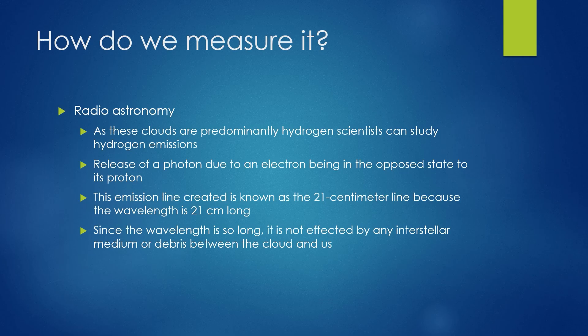How do we measure these? We use radio astronomy. As these clouds are predominantly hydrogen, scientists can study their hydrogen emissions. The release of a photon due to an electron being in the opposed spin state to its proton causes a photon to be released. This emission line is known as the 21 centimeter line because its wavelength is actually 21 centimeters long. Since the wavelength is so long, it's not affected by any interstellar medium or debris between the cloud and us, making it easy to measure.